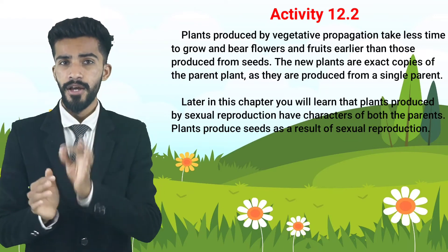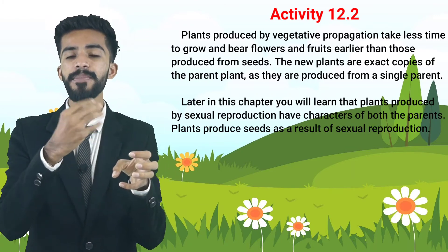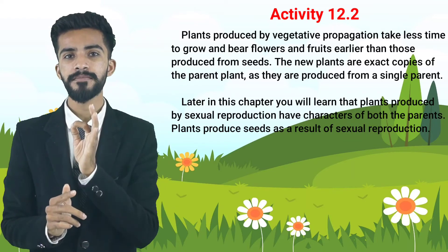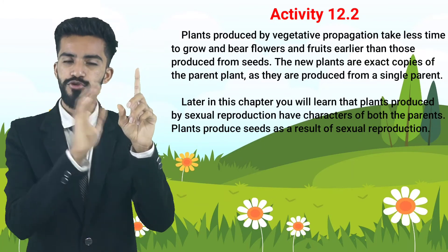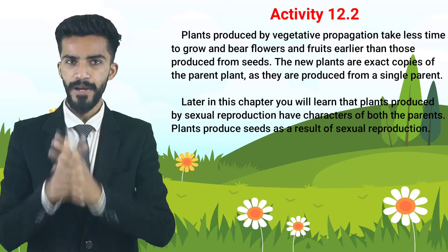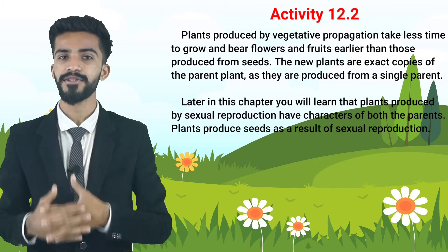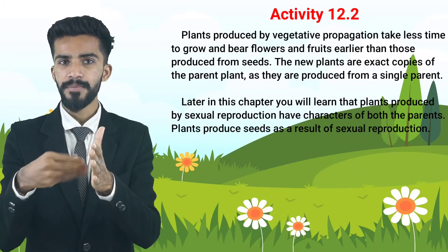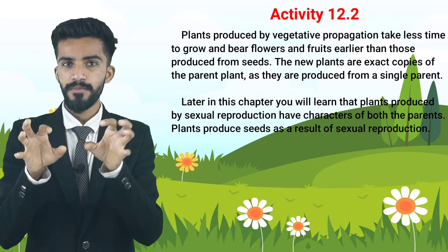The new plants from vegetative propagation are exact copies of the parent plant because they are produced from a single parent. In sexual reproduction, the new plant will later be seen to have characteristics of both parents.